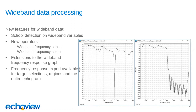We've also made extensions to the wideband frequency response graph. It's now accessed via the view menu instead of right-clicking on the echogram. The graph can show data from multiple transducers in the same graph, and we now show the frequency response for SV and TS variables in addition to the target frequency response that we had in EchoView 8. Exporting has also been made far more flexible than in previous versions.